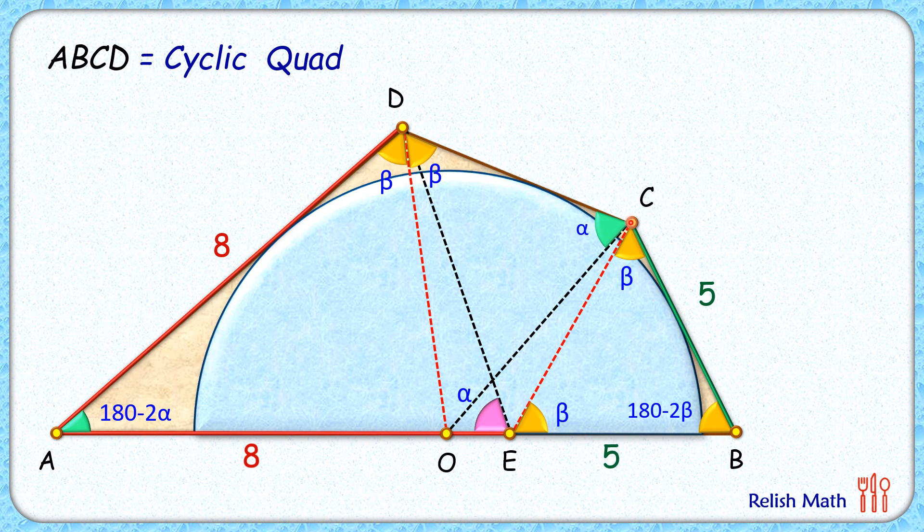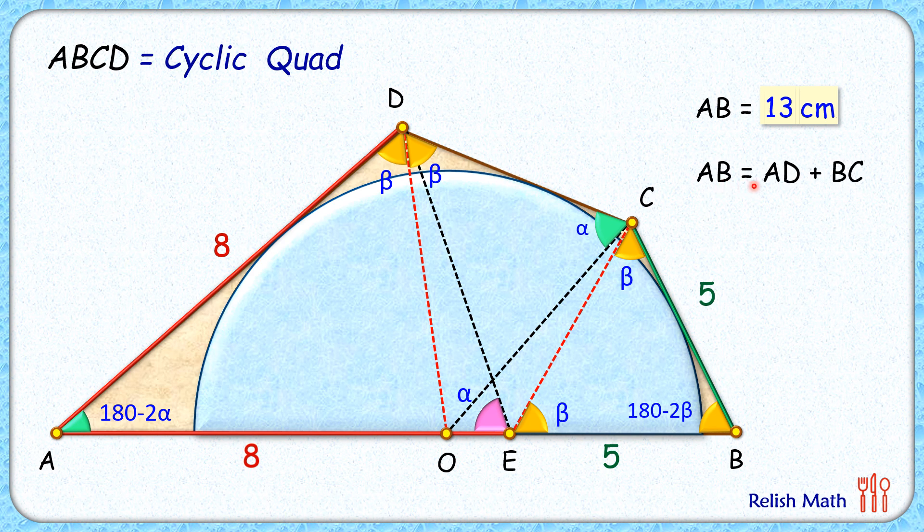Thus the full length AB will be 8 plus 5 or 13 centimeters. This question was actually asked in another form to prove that line segment AB equals AD plus BC, but personally I like questions that find values rather than prove them.